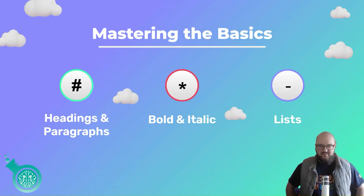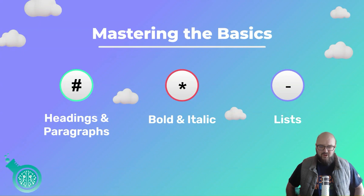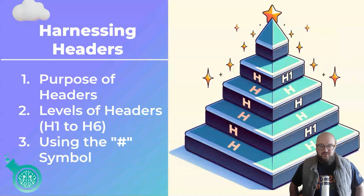We're going to teach you the basics, and really the three things you need to know are how to do headings and paragraphs, bold and italics, and lists. We'll go over sort of everything, but there are just a few simple symbols — if you forget everything else, just remember these ones.